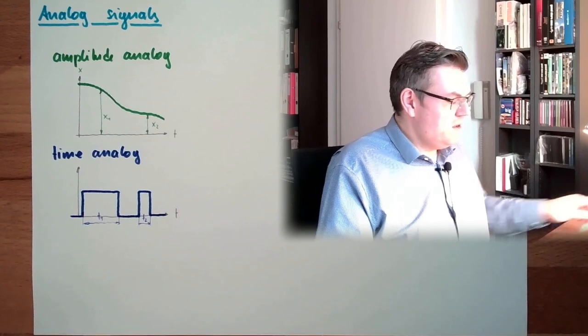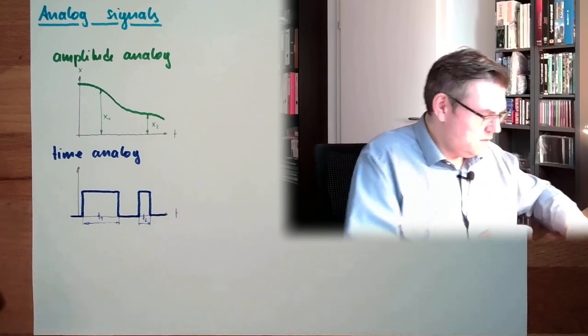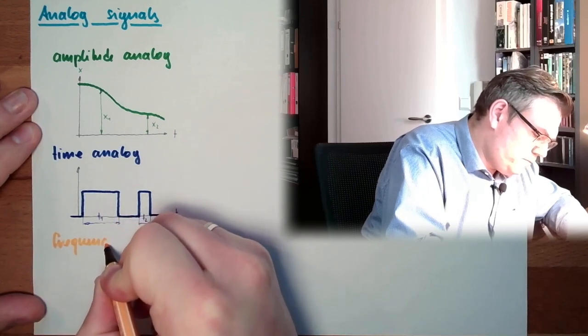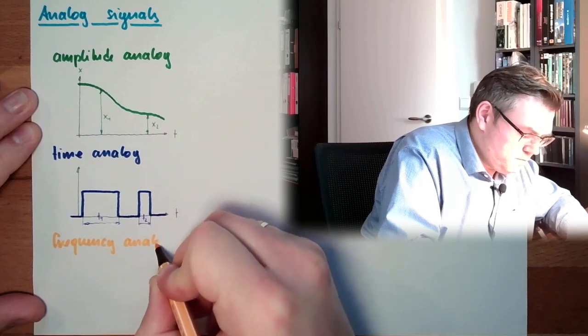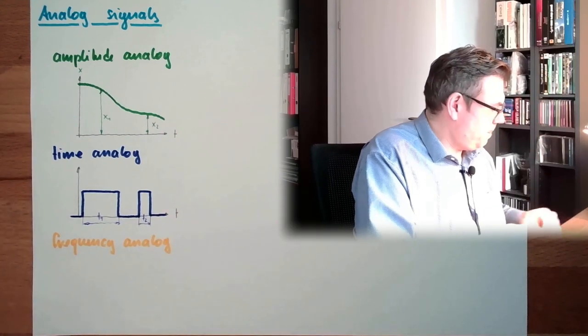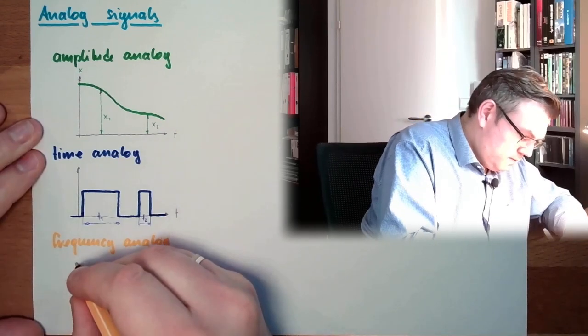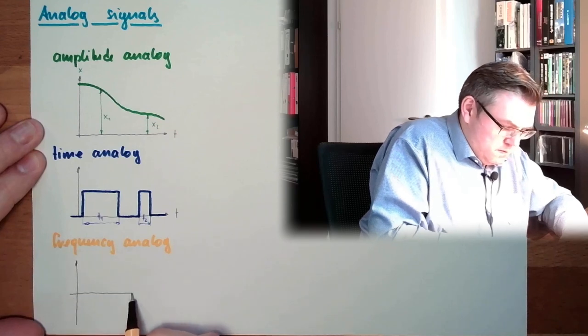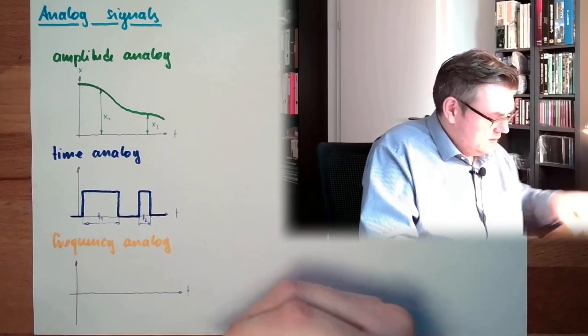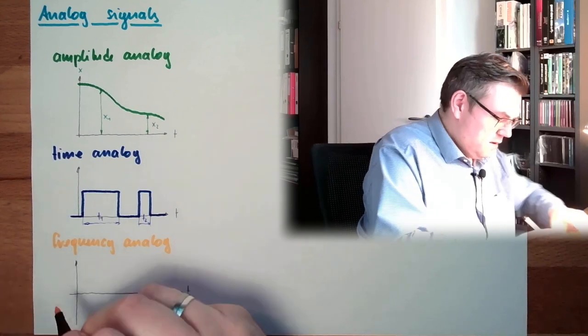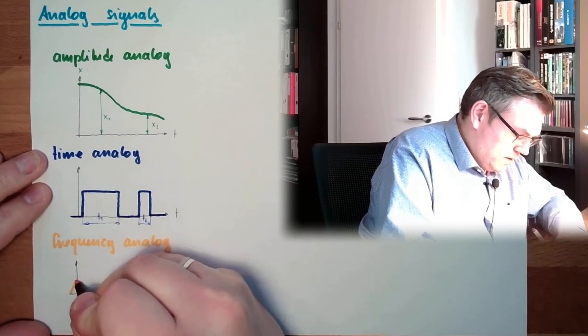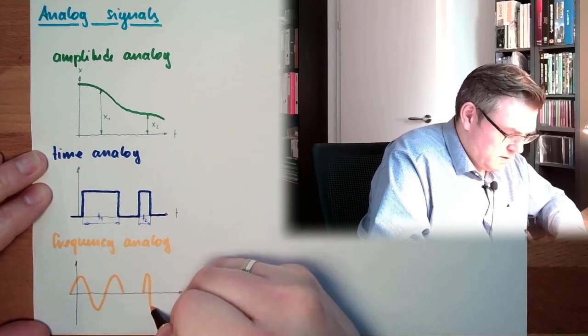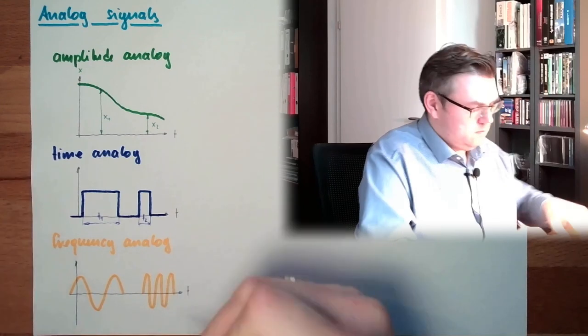And then, we also have a frequency analog. Let's have a look at this signal. Here. It might look like that. And at the other point in time, it might look like that.